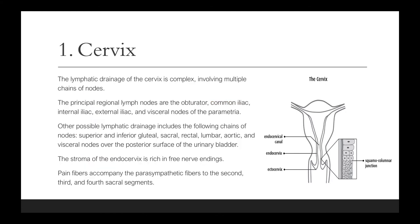The lymphatic drainage of the cervix is complex, involving multiple chains of nodes. The principal regional lymph nodes are the obturator, common iliac, internal iliac, external iliac, and visceral nodes of the parametria. Other possible lymphatic drainage includes the superior and inferior gluteal, sacral, rectal, lumbar, aortic, and visceral nodes over the posterior surface of the urinary bladder.